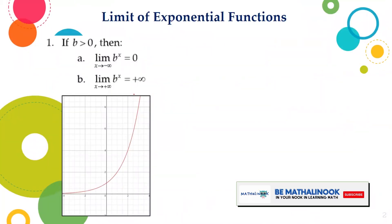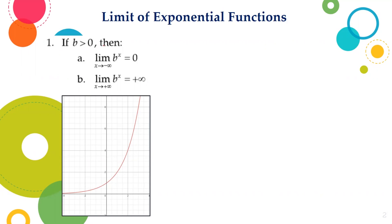These are the theorems that describe the limit of an exponential function. The first one: if b is greater than 0, then the limit of b raised to x as x approaches negative infinity is equal to 0, and as x approaches positive infinity it equals positive infinity. The graph below represents f(x) = 2^x, where b is greater than 1. Observing the behavior of the function as x approaches negative infinity, the function approaches 0, while as x approaches positive infinity, the function approaches positive infinity.